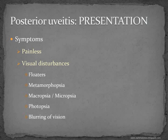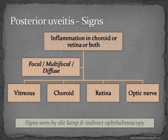Finally, blurring of vision is a quite common presentation in posterior uveitis. It could be because the focus of inflammation is very close to the macula, or because of dense vitritis, or due to complications of uveitis including cataract or glaucoma. The signs are due to inflammation in the choroid, retina, or both — seen as single focus, multifocal, or diffuse. Signs are found in the vitreous, choroid, retina, and the optic nerve.